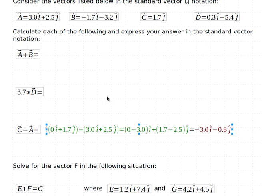So when I go to write this out, I want to keep in mind that it's 0 i hat plus 1.7 j hat. And then I'm subtracting from that the 3.0 i hat plus 2.5 j hat.